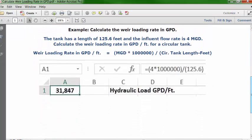Let's see how to put this in an Excel spreadsheet. Open a blank worksheet, put your cursor in cell C1, and type this description: hydraulic load in gallons per day per feet.